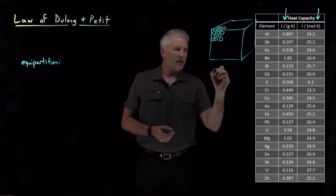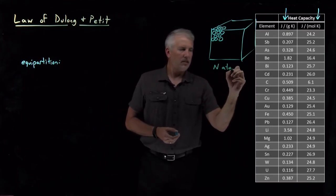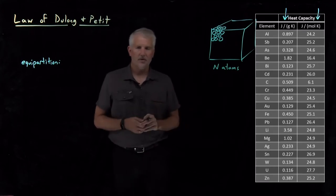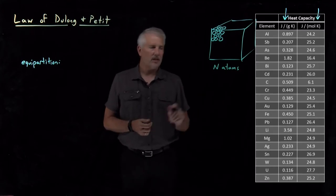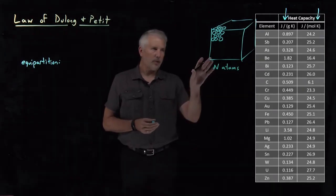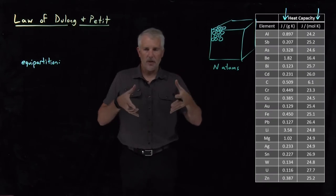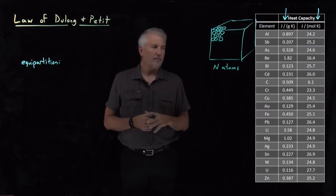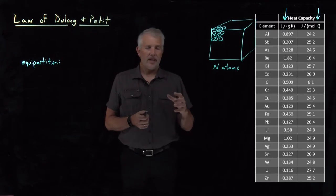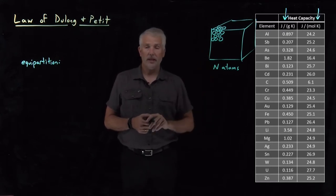So let's say we've got a chunk of this metal or whatever the solid is that contains N atoms. So we've begun, essentially, thinking of this block of metal, block of our material, as a large molecule containing many, many atoms.